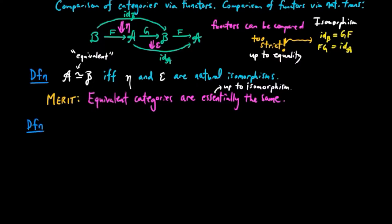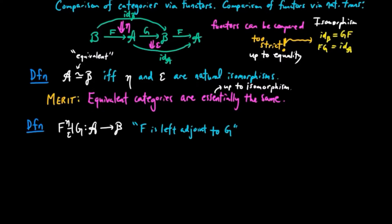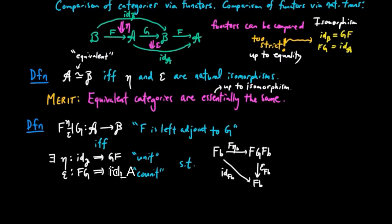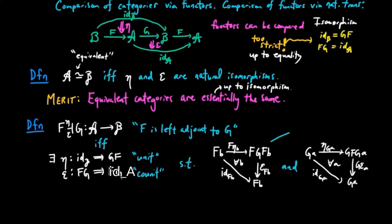We can relax the notion of equivalence further to that of an adjoint situation. We say that F is left adjoint to G via natural transformations eta and epsilon, called the unit and co-unit respectively, if and only if they satisfy the following axioms: first, that epsilon_FB ∘ F(eta_B) equals the identity on FB for each object B, and also that G(epsilon_A) ∘ eta_GA equals the identity on GA for each object A. These identities are called the triangle identities for the adjoint situation.